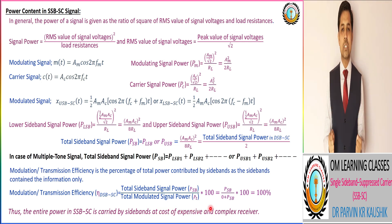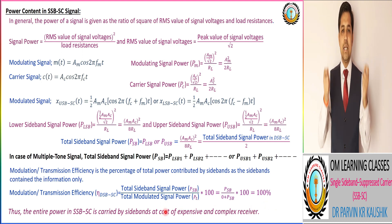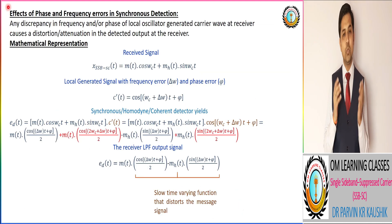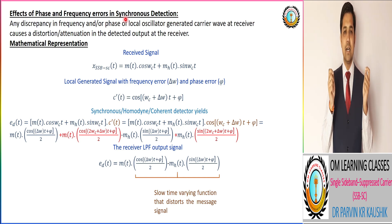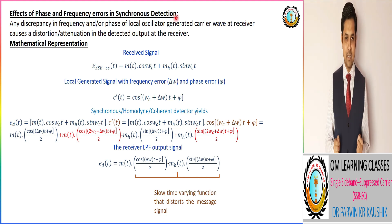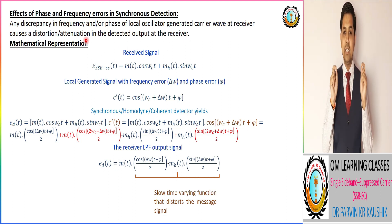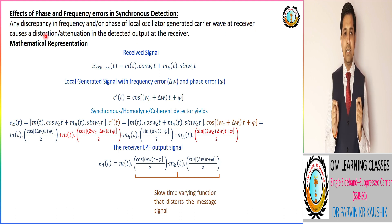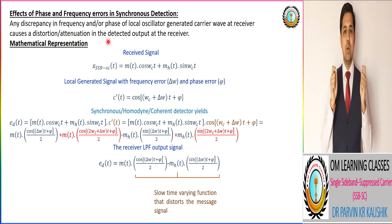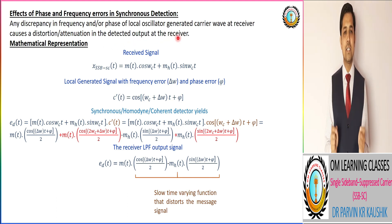This comes at the cost of an expensive and complex receiver due to the use of a synchronous detector. Similar to DSB-SC modulation technique, there is also a requirement for a synchronous detector at the receiver for SSB-SC modulation. Therefore, there is also the effect of phase error and frequency error in the synchronous detection. Any frequency error or phase error produces attenuation, distortion, or both in the estimated modulating message at the receiver for the SSB-SC signal.